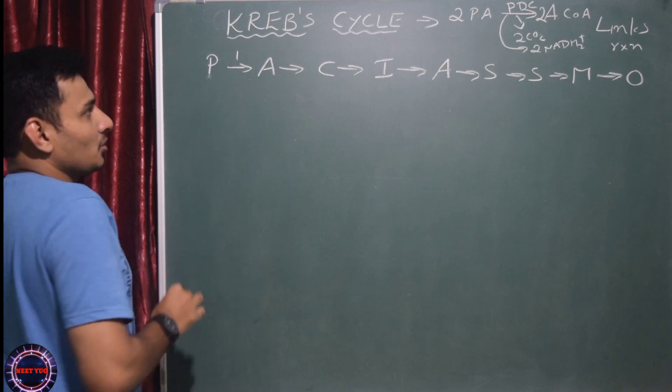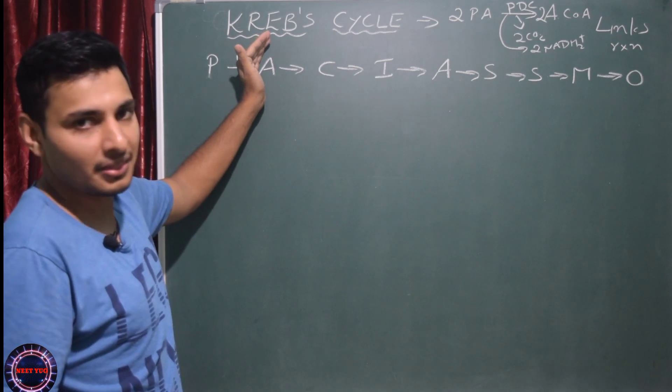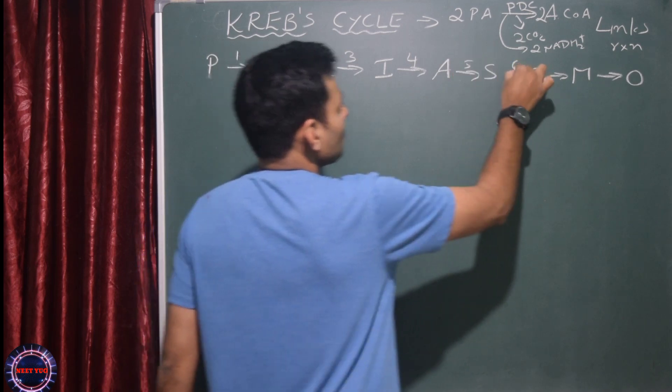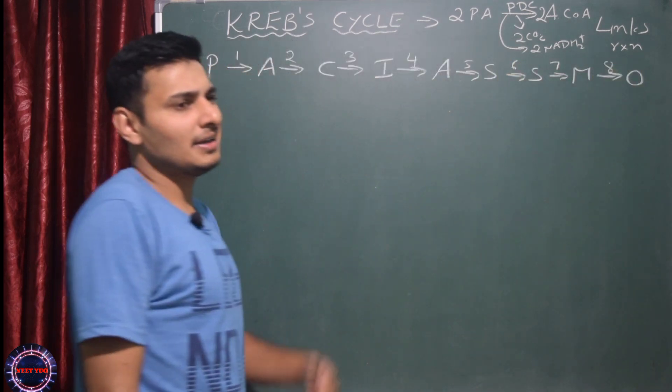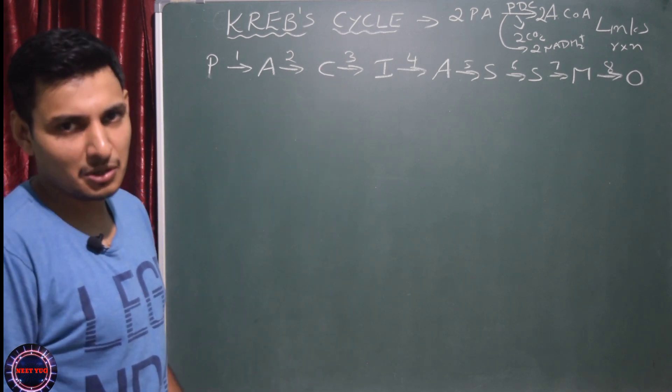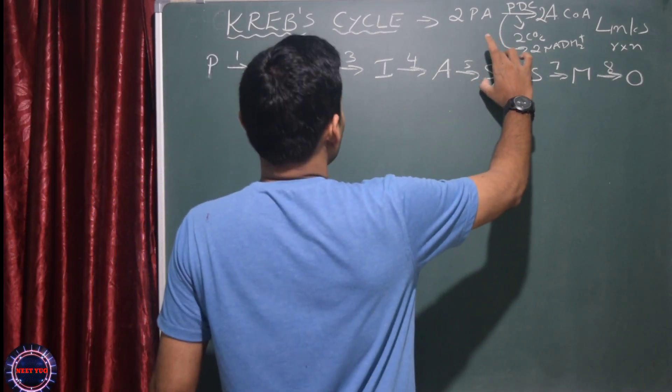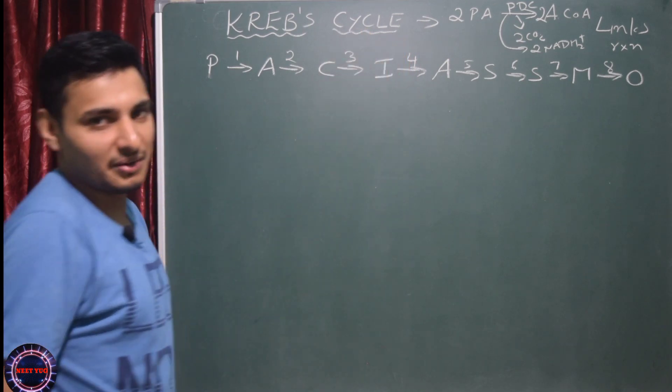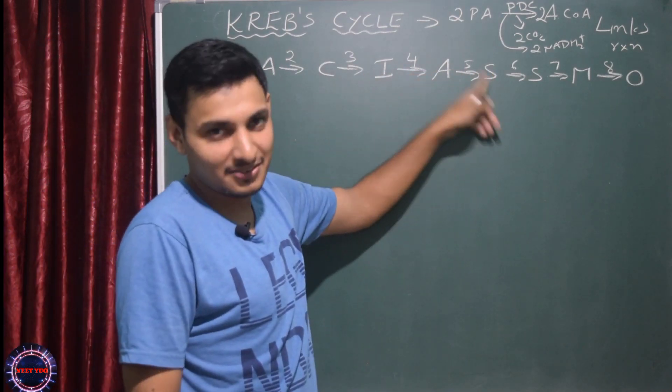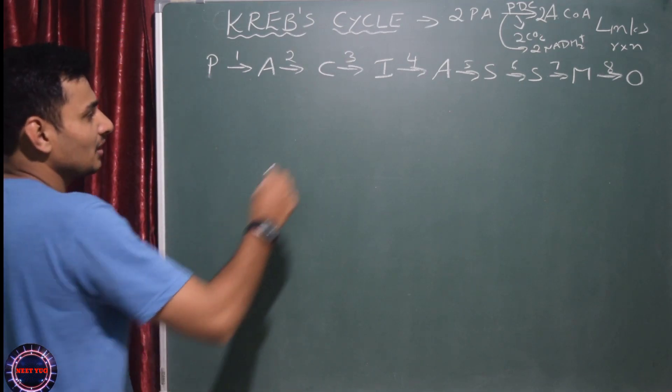Now let's write the total steps. Technically Krebs cycle starts from here. There are 8 steps: 1, 2, 3, 4, 5, 6, 7, 8. Actually in higher classes you learn complete steps. NCERT gives you 8 steps but doesn't give all details. They haven't mentioned succinyl coenzyme A or isocitrate. So I'll add those. P - what is P?